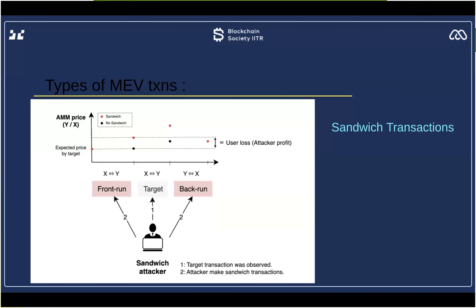Another gas golfing technique is to leave small token balances in your contract instead of draining them completely. This is because it costs more gas to initialize a storage slot, which happens when the balance is zero. It costs more gas to go from zero to a non-zero value than it does to update an existing non-zero storage slot.